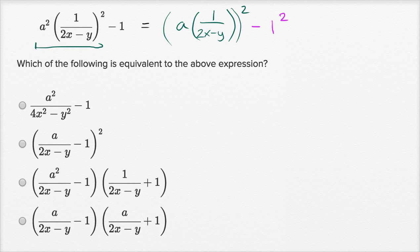Or even better, we can write it like this. Because a times one over two x minus y, that's the same thing as a over two x minus y. So it's that squared minus one squared.